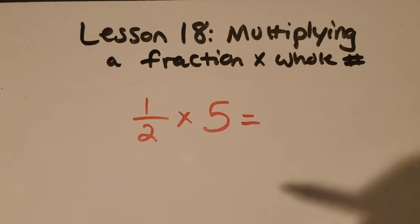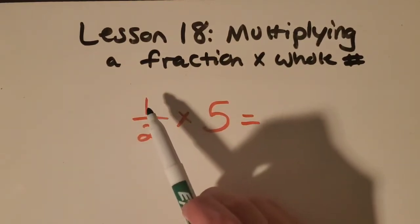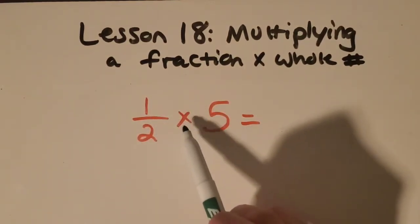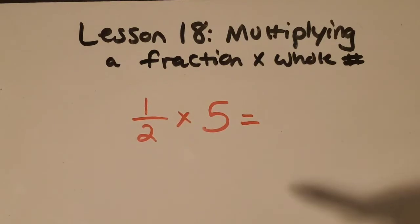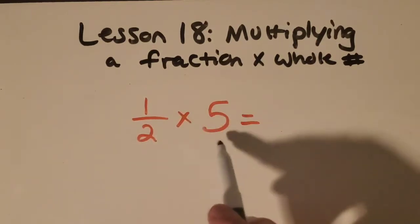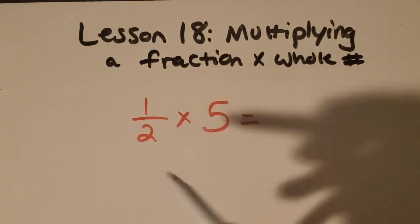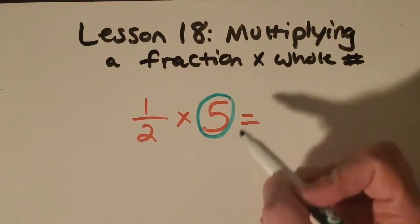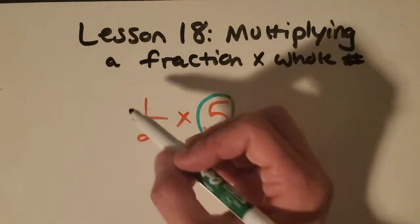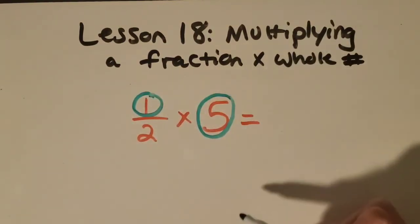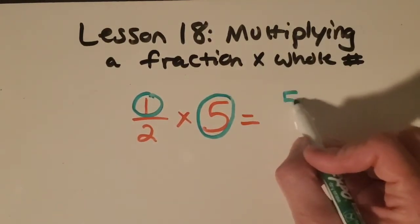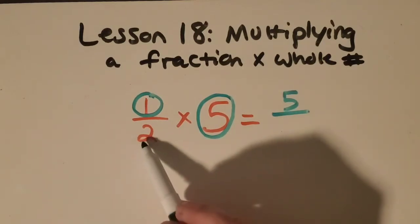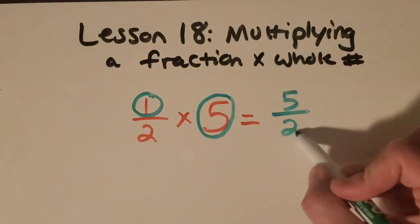All right, here's another example for us. So we have one-half times five. We can do the same strategy when the fraction is here as we did at the other ones. So let's circle the five. So the whole number times the numerator, one, which is five. Okay, and then keep the same denominator, which is two.